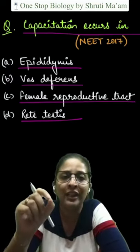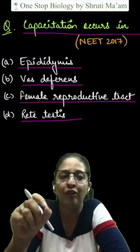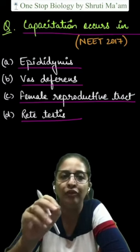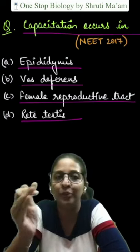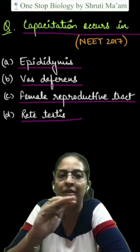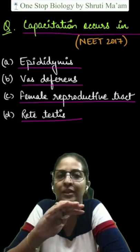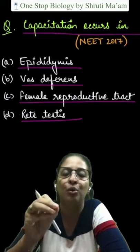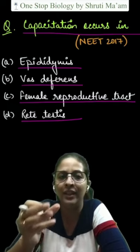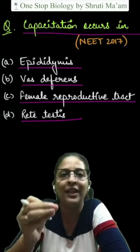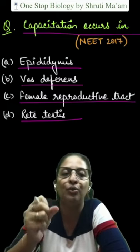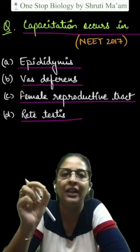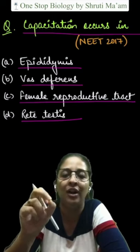Now remember, the secretions of the female reproductive tract remove the coating substances which are deposited on the surface of sperm, particularly at the acrosome. This exposes the receptor sites of the acrosome and makes the sperm active to penetrate the egg and fertilize the ova.